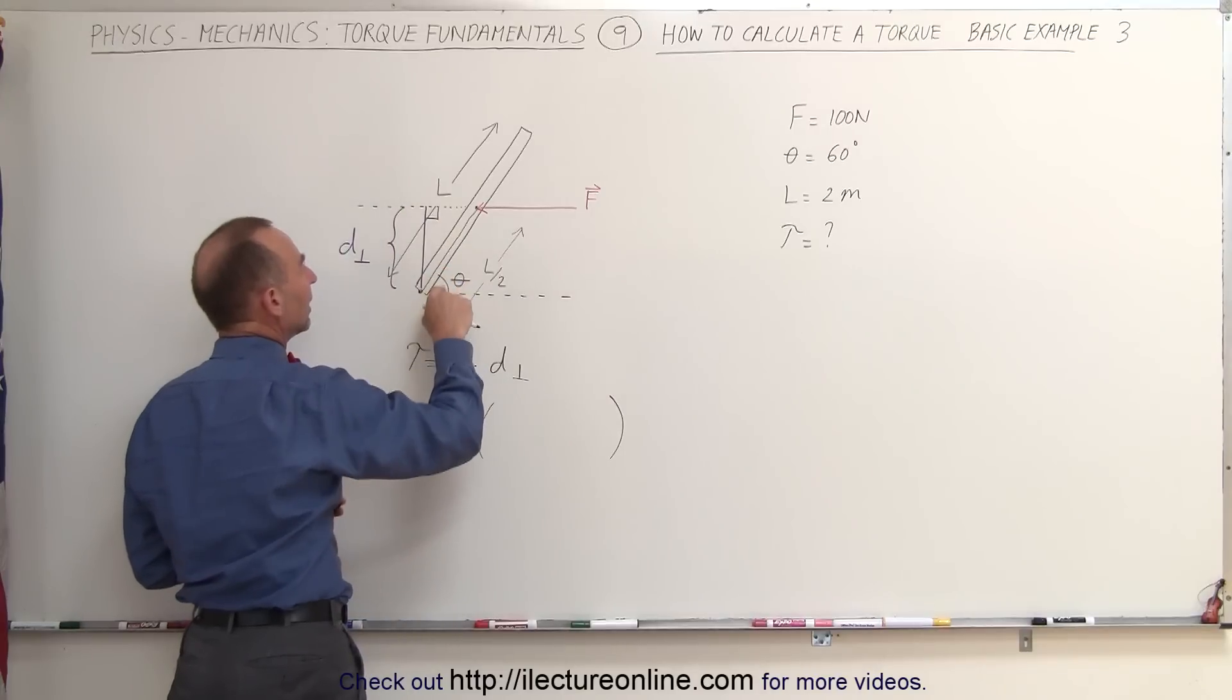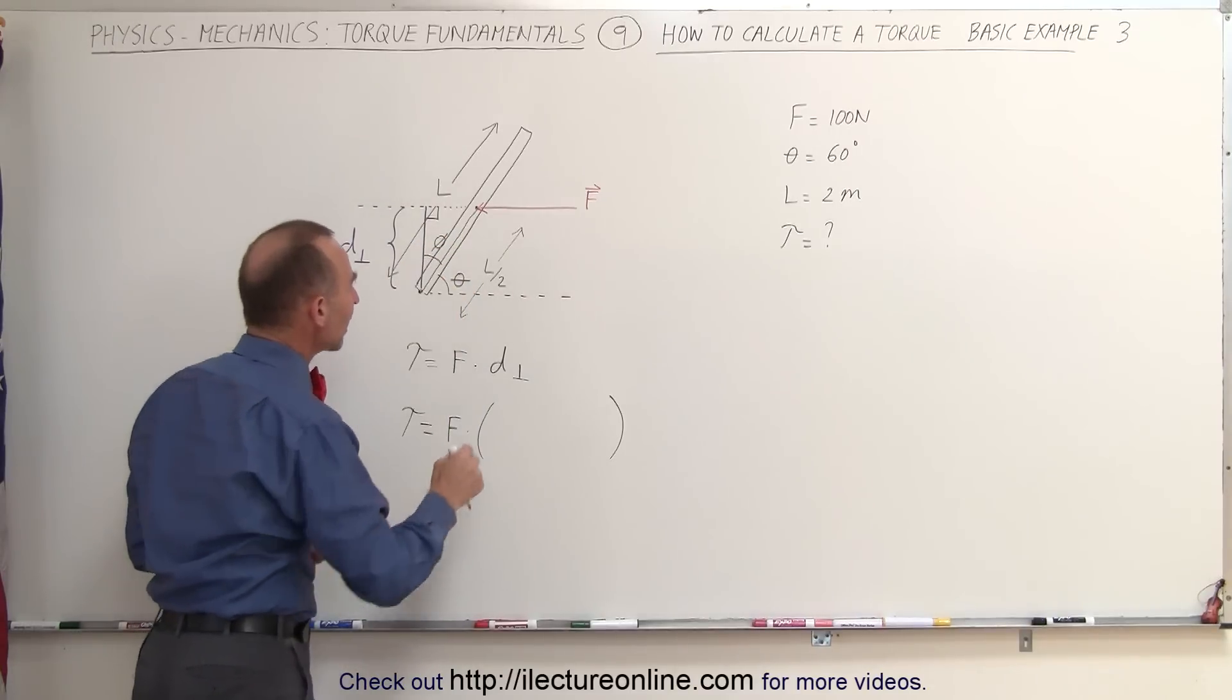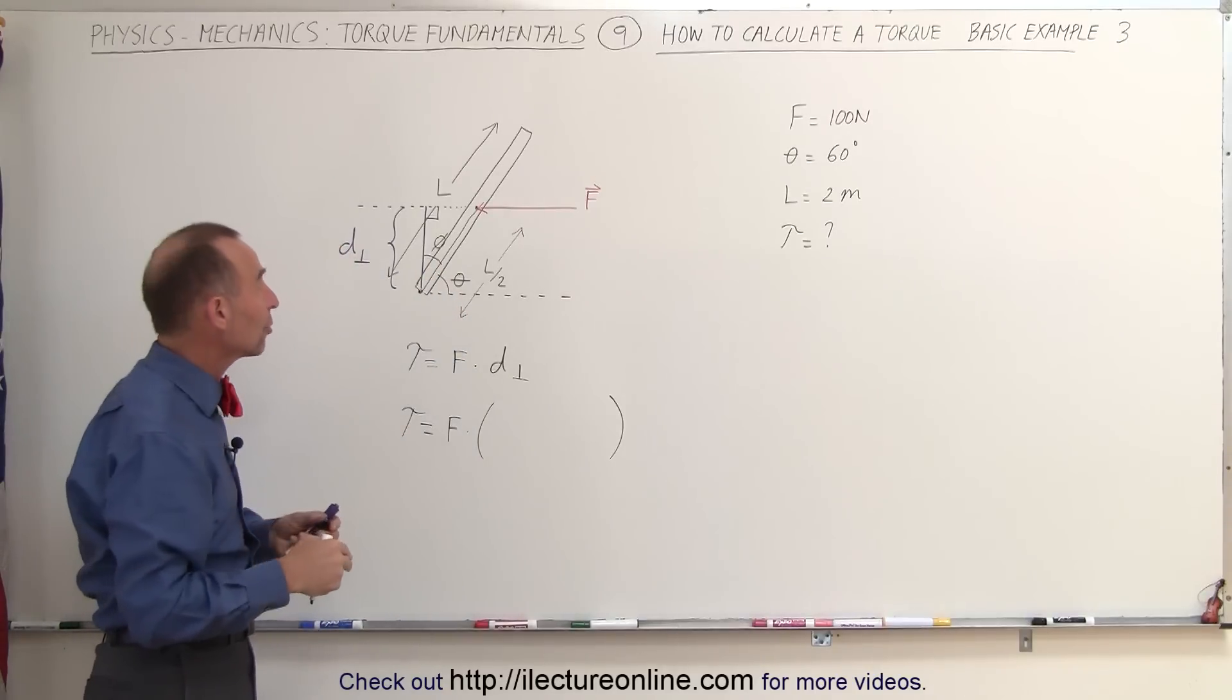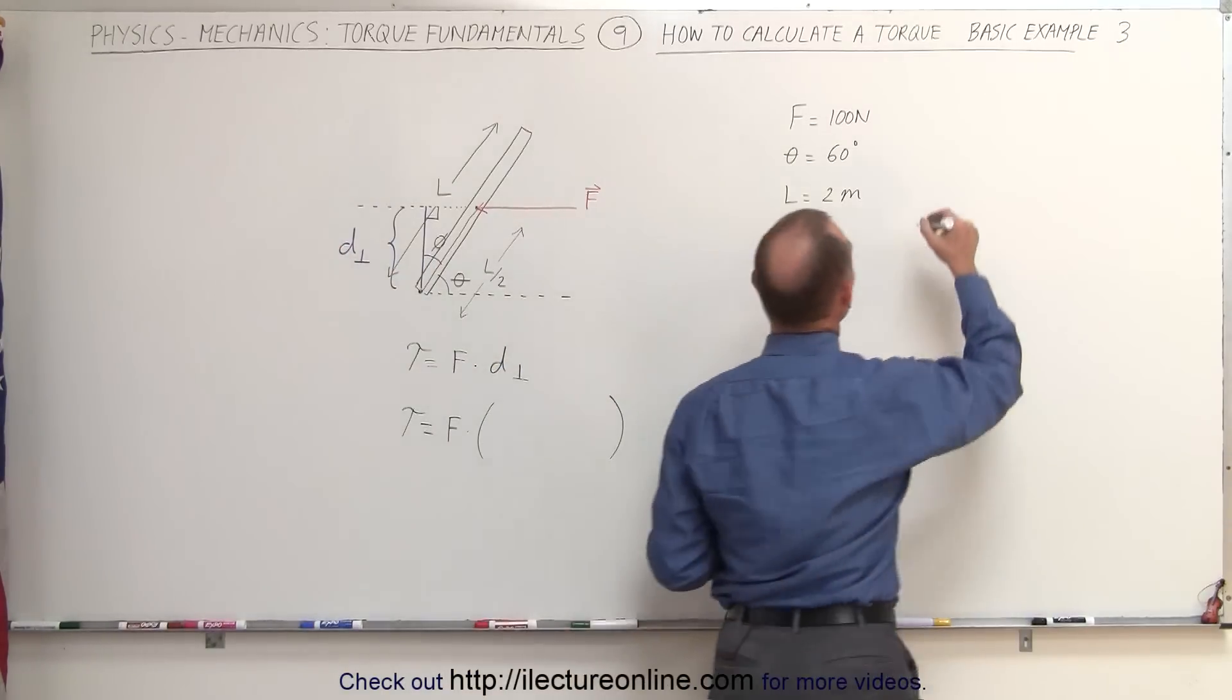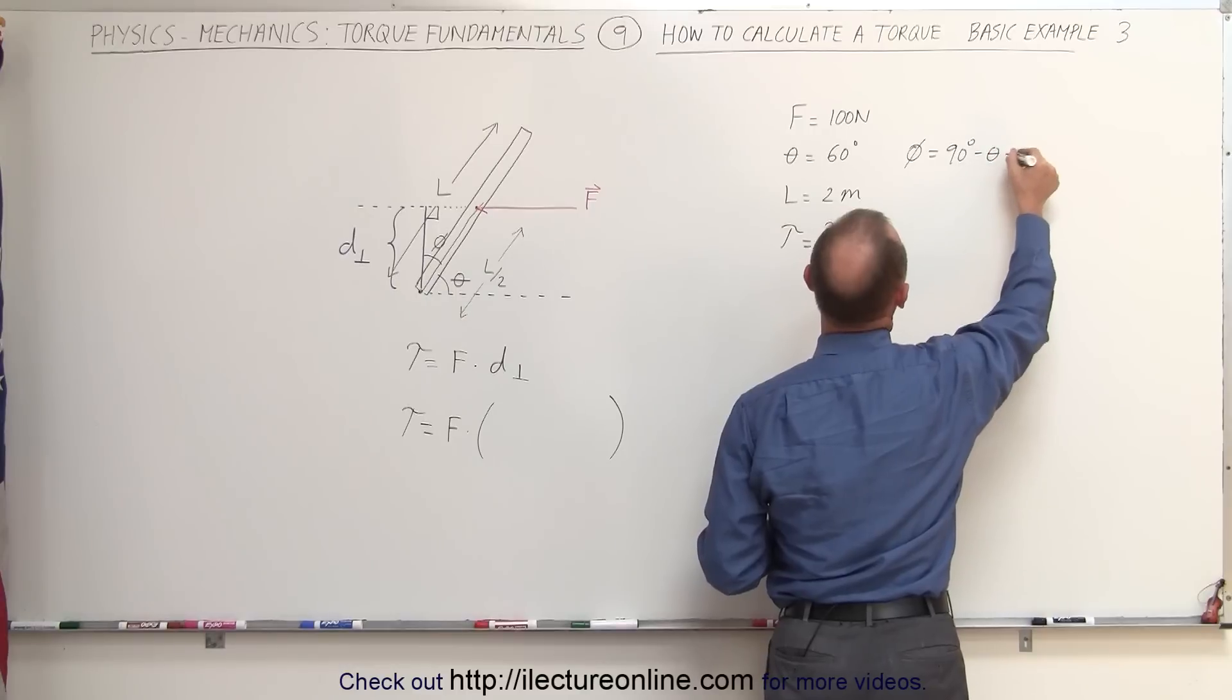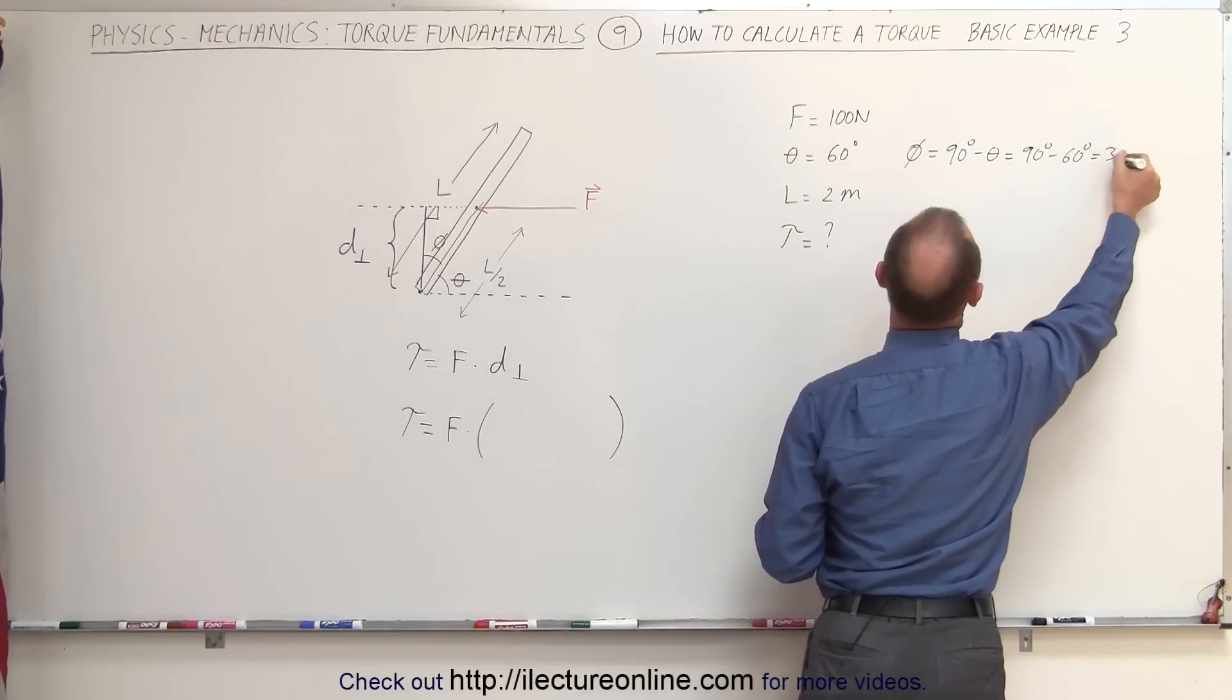This here is, let's see. We have the angle theta here. Then we have another angle, let's call this angle phi. If the angle theta is 60 degrees, then phi must be 90 minus 60 degrees or 30 degrees. So that means that phi is equal to 90 degrees minus theta, which is 90 degrees minus 60 degrees, which is 30 degrees.